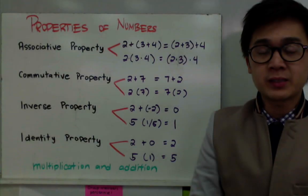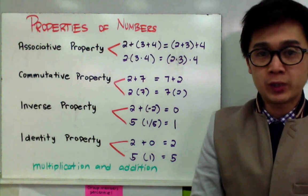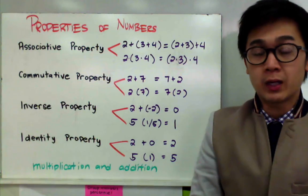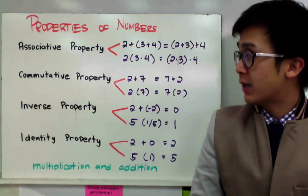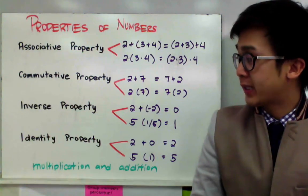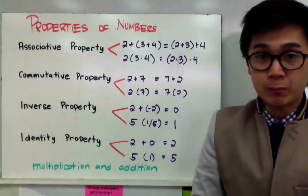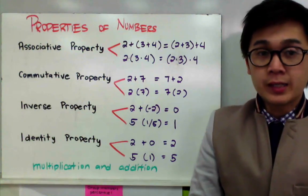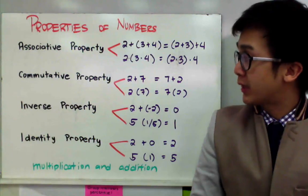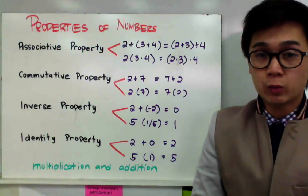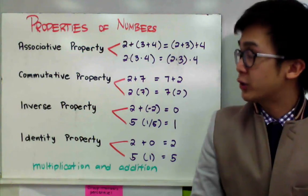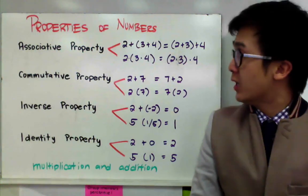We have several number properties that we need to be familiar with in algebra. Some of them will be the associative property, commutative property, inverse property, and identity property. These properties basically describe what operation or how the operations work in a certain expression or equation.